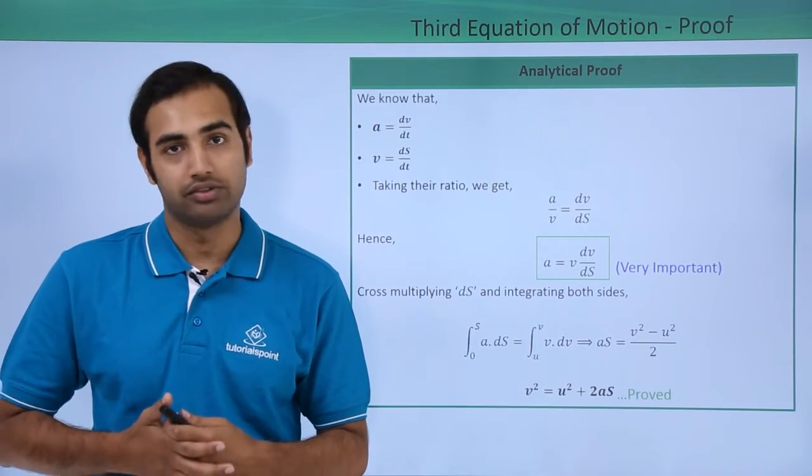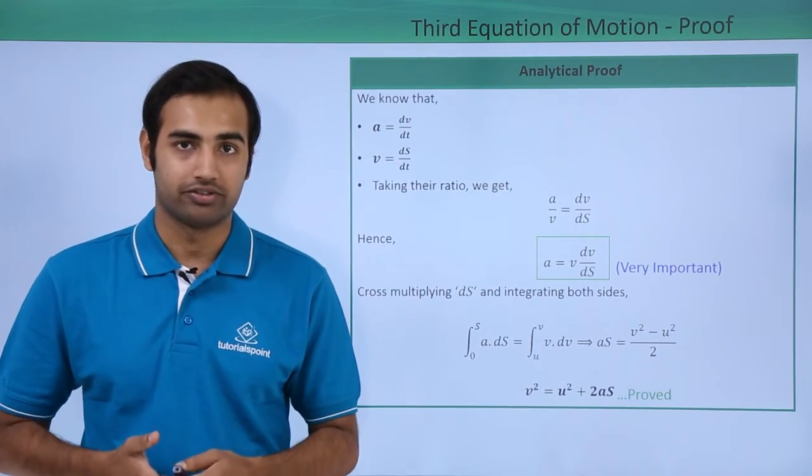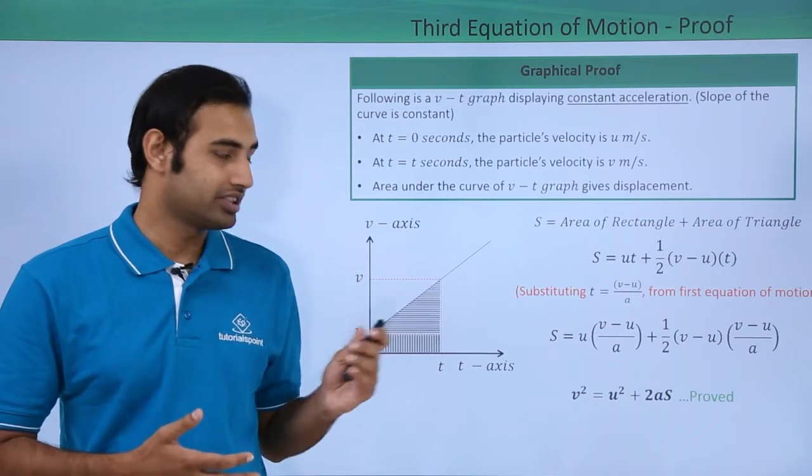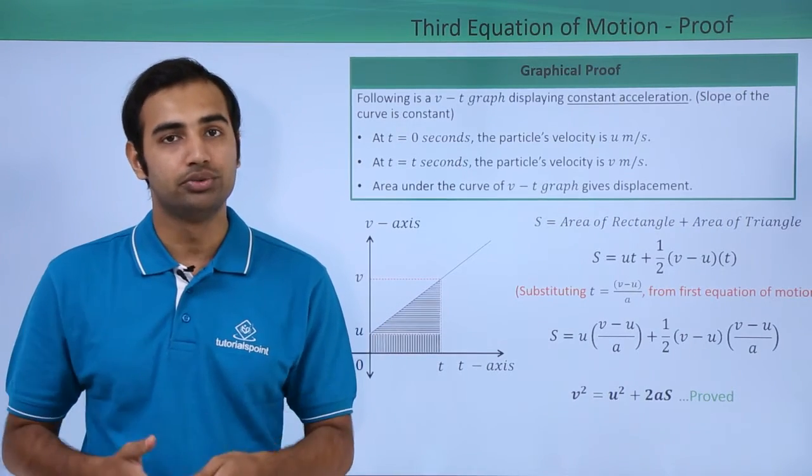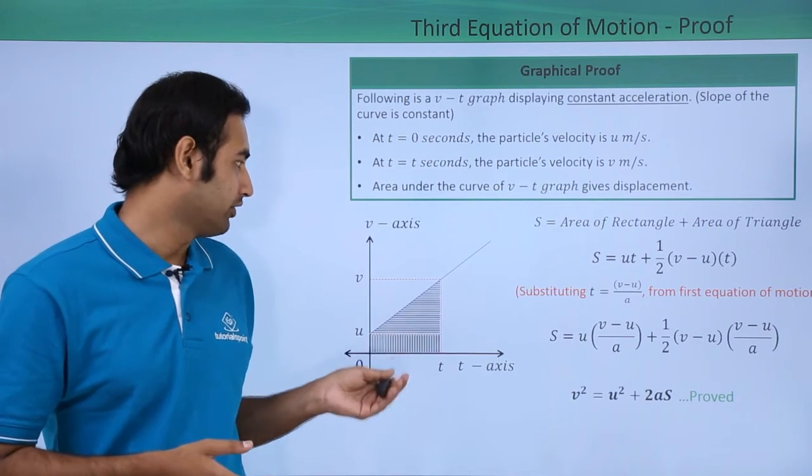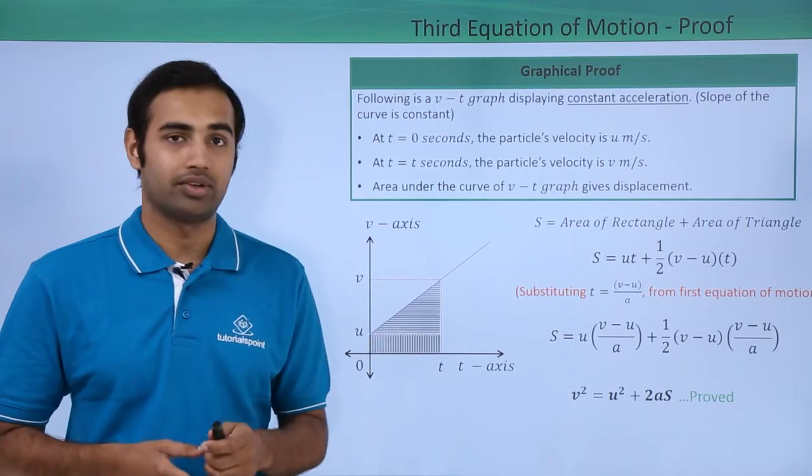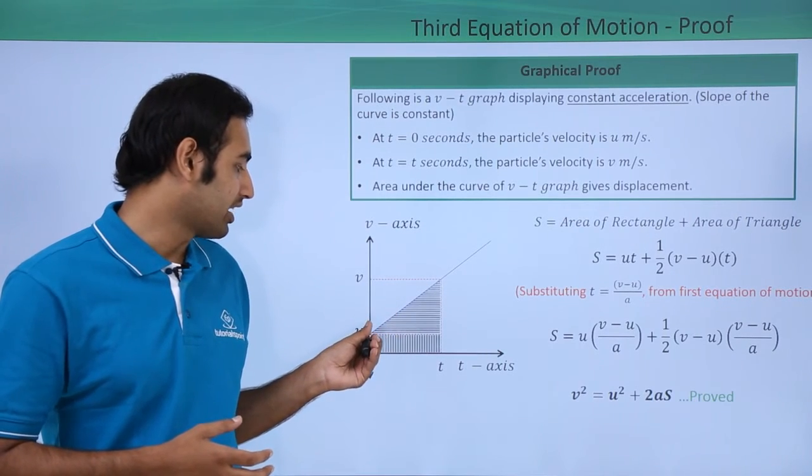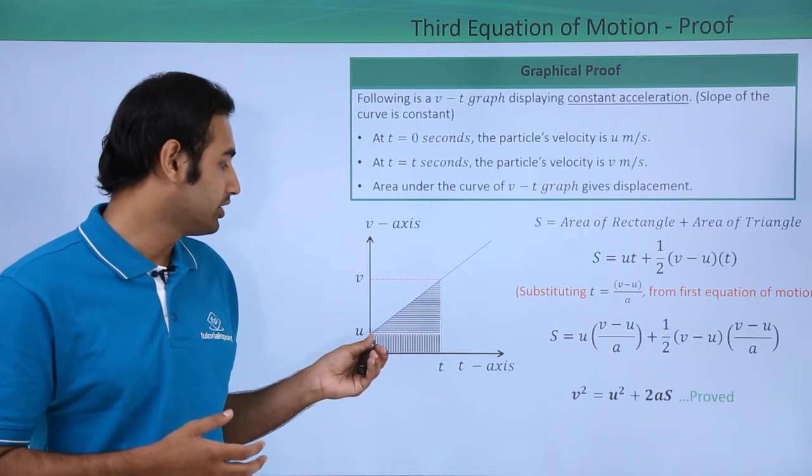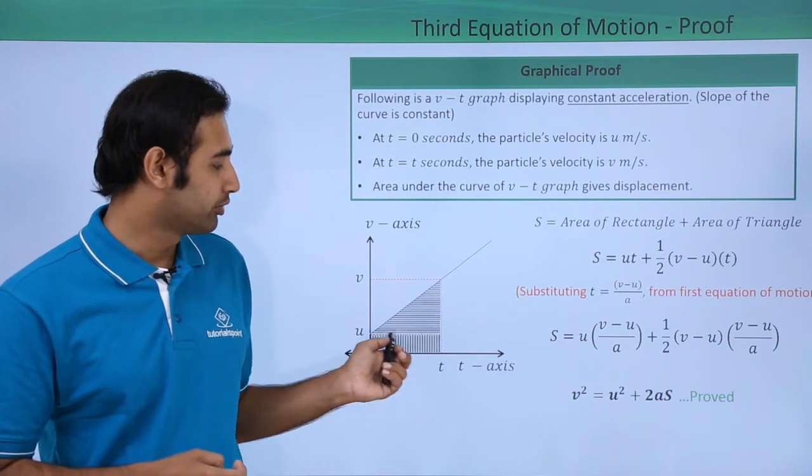Now let us try to prove the third equation of motion using graph. So over here I have the same velocity time graph that I used to prove first and second equation of motion. So here I have the velocity axis, here the time axis and this is the same velocity time graph that I took. Now this blue line indicates it starts at u over here, so when t = 0, velocity was equal to u, the initial velocity and when t = t, the velocity was equal to v.